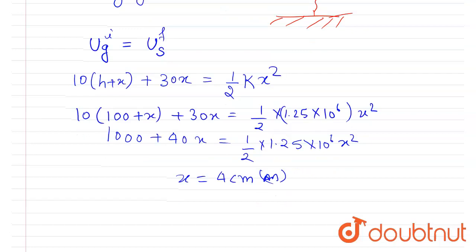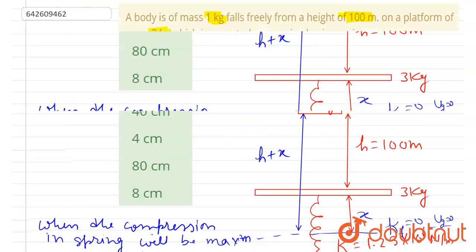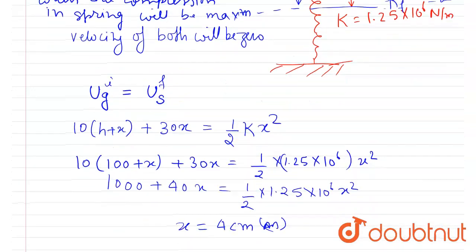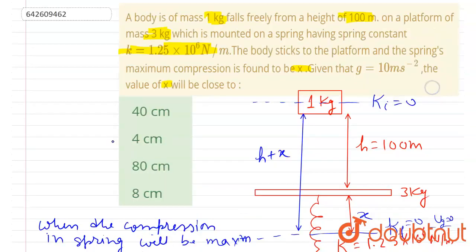And you can also do it by converting this gravitational potential energy into kinetic energy when it touches the platform, and then you could solve it in two steps. Right? From there also you will get the same answer, 4 centimeters. Right, so the correct answer is B. Thank you.